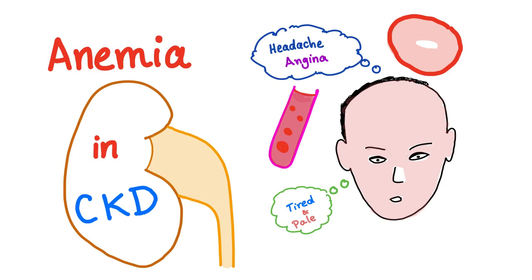Symptoms of anemia are the exact same thing: tired, pale, headache, lazy, dizzy, short of breath on exertion, angina. The signs will include stuff like murmur due to a hyperdynamic circulation and so forth.